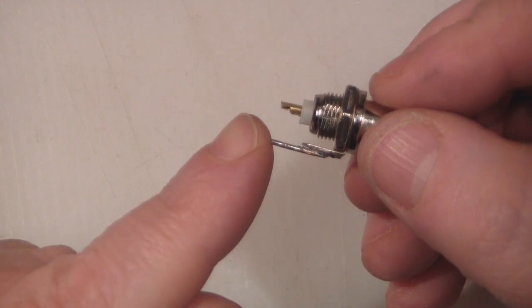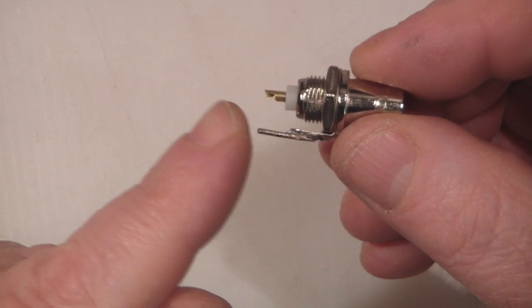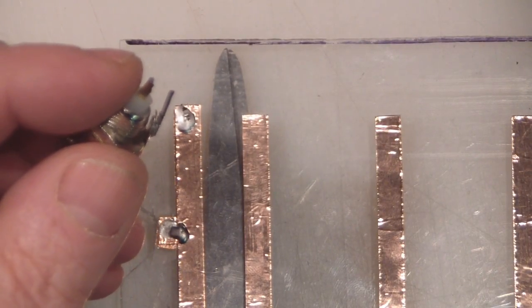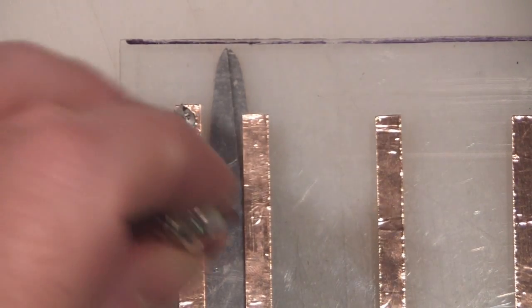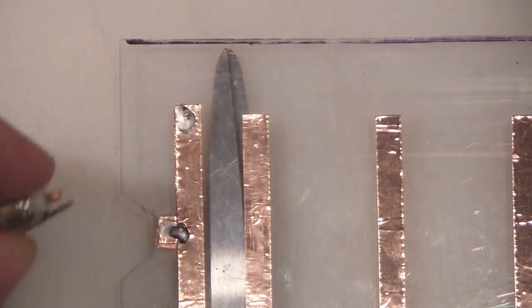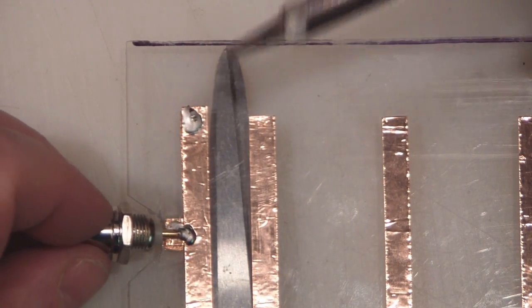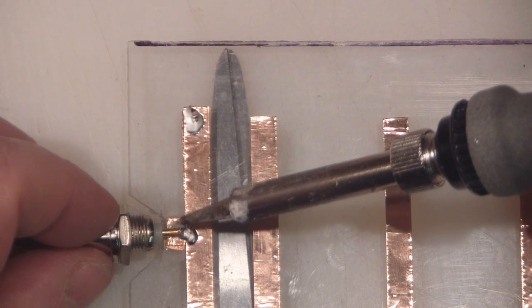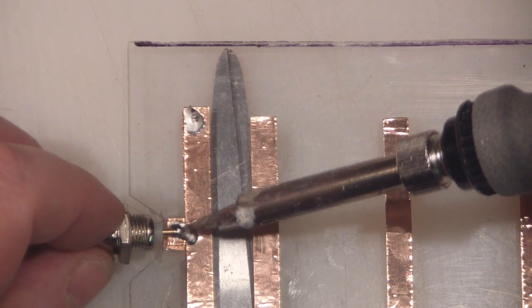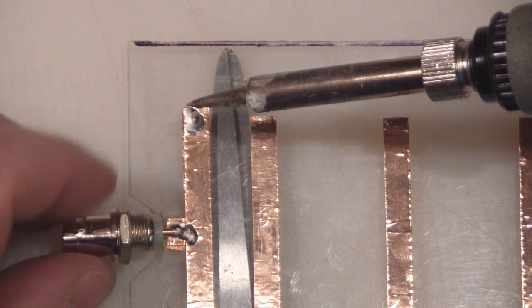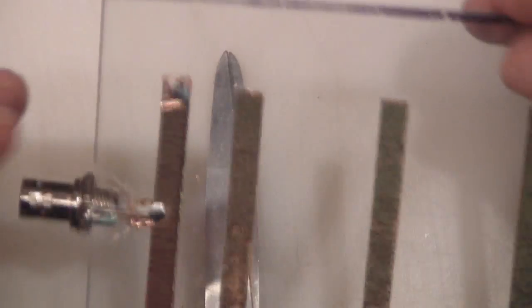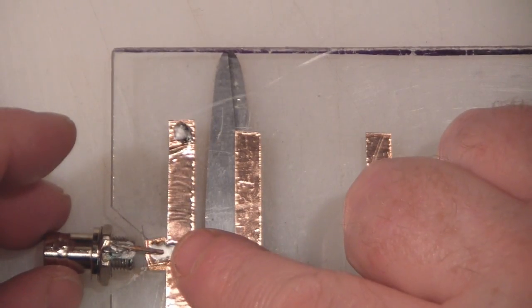So I've gone ahead and soldered a small length of copper wire on there so we can extend that solder tag. So I'm going to solder the center element of the BNC connector first, and I'm going to connect that on the side of the Perspex where the actual elements are on. And then flip it over and we're going to solder on this ground here.